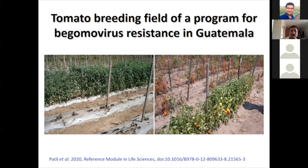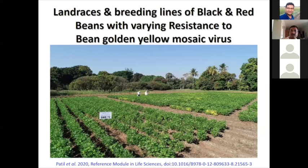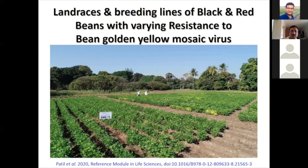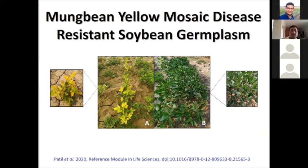There are a lot of breeding efforts going on for resistance to tomato viruses, even in India. This picture is from CIAT in Colombia. There are a lot of landraces of beans — mostly black and red beans — that have varying resistances against bean golden yellow mosaic virus, which is highly prevalent in Latin American countries like Brazil. This is a breeding effort against mungbean yellow mosaic virus in soybean. You can see the resistant trait here, and this is the susceptible line infected by mosaic.